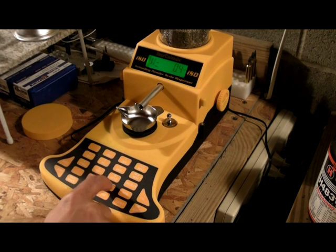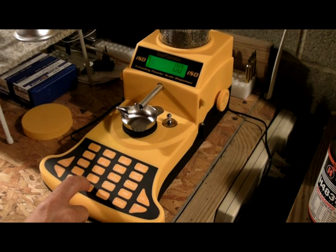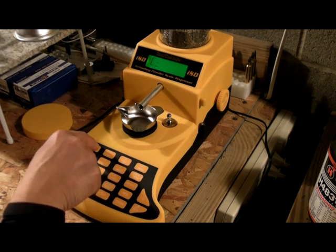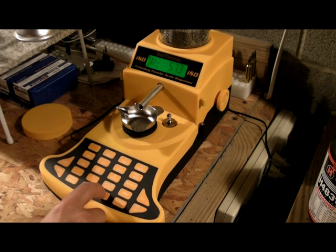And then hit cancel or stop. And then let's go ahead and recall that first charge weight. If I remember correctly, this is 57.1 grains. Or 57.3 grains. There it is, 57.3. We'll hit dispense.